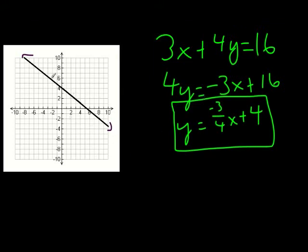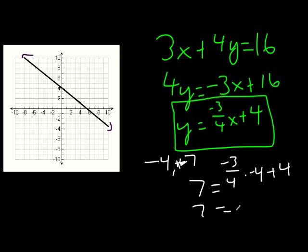Let's verify with point (-4, 7). Plugging in: 7=-3/4(-4)+4. The negatives cancel, so -3/4 times -4 becomes positive 3, so 3+4=7. Voila, 7=7. Slope-intercept form is possibly the most accepted way of finding the slope of an equation.